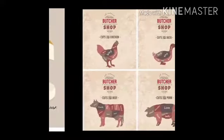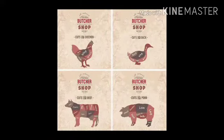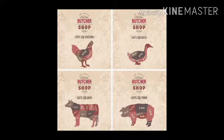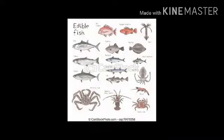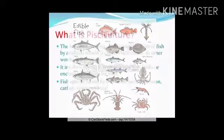The second is meat animals. The animals which provide us meat or flesh are called meat animals, which include goat, chicken, fish, and pig. Edible fishes include catfish, crab, and prawns.